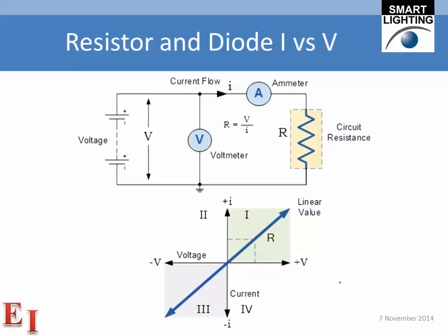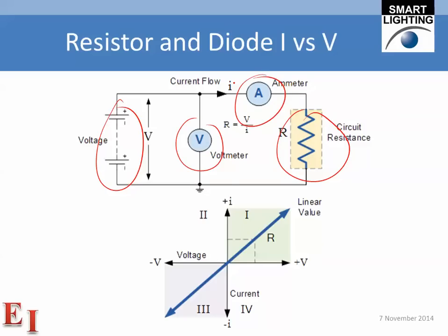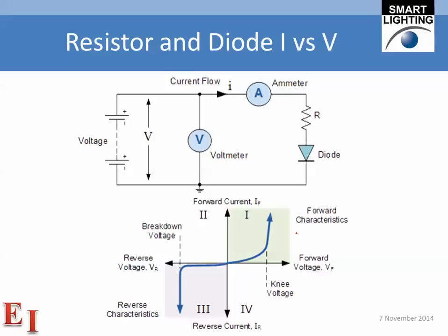We'll generalize our approach by considering a graphical representation, then extend it to diodes. If we set up an experiment with a voltage source, a resistor, a voltmeter, and an ammeter, and vary the voltage from large negative to large positive while measuring voltage and current, for a resistor we get a nice linear curve. But because the relationship between current and voltage for a diode is non-linear, we do the same measurement and see what we get — and it looks something like a very different curve.